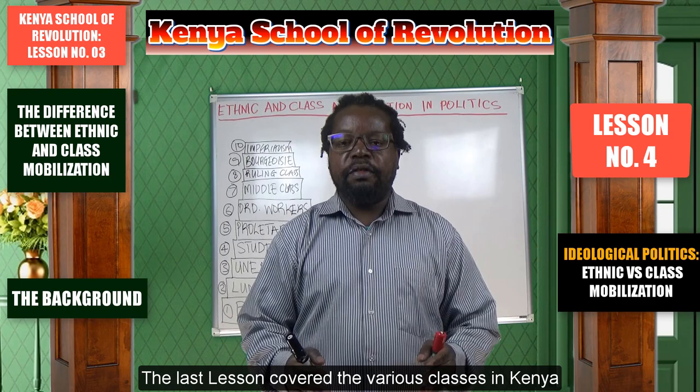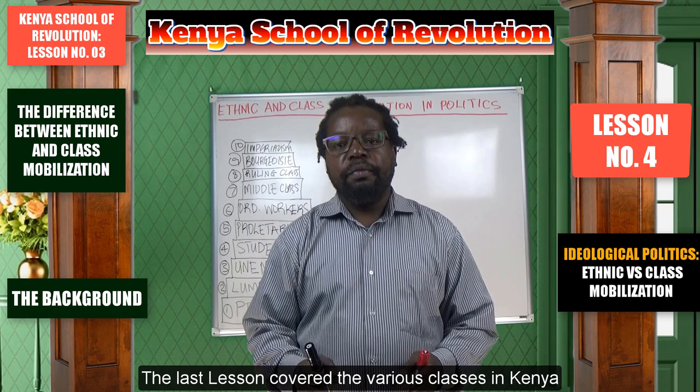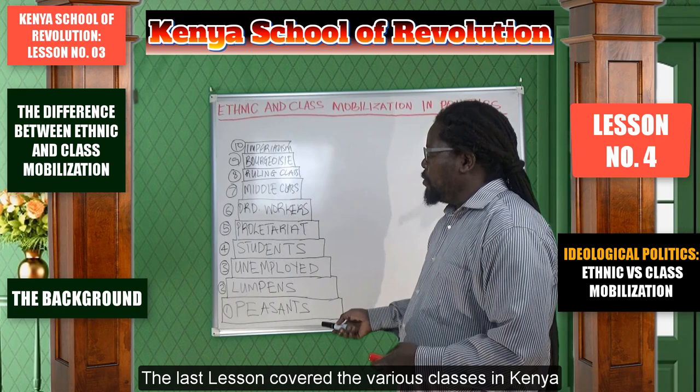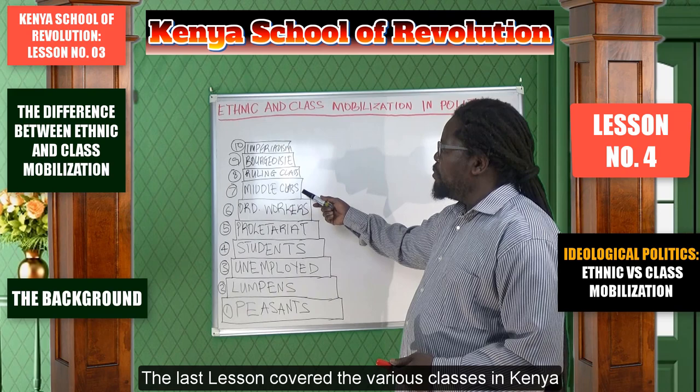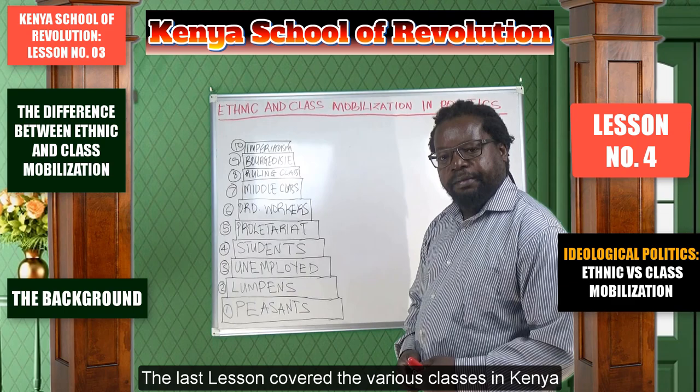In order to demonstrate the difference between ethnic mobilization and class mobilization, we will have to go to the board once again. We have already gone through all these classes: peasants, lumpens, unemployed, students, proletariat, ordinary worker, middle class, ruling class, bourgeoisie, and imperialism up there. In today's Kenya, the way politics is practiced is such that different ethnic-based political parties mobilize their own ethnic groups.